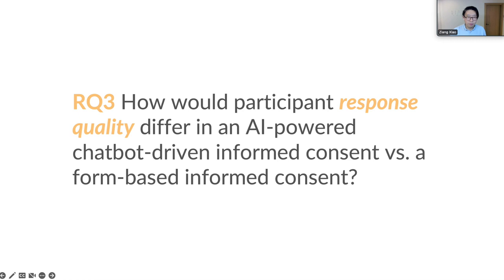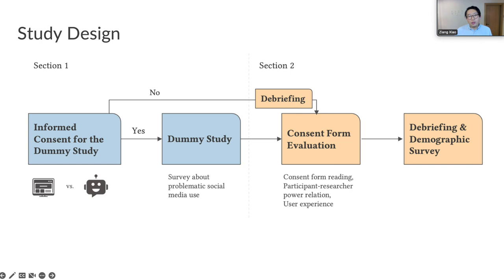To answer all research questions, we conducted an online study with 238 participants. The participant would be randomly assigned to interact with either Rumi or a static form for the informed consent process. It is a dummy informed consent process that asks participants to answer a survey about problematic social media use. Upon consent, the participant starts the dummy study. Then in the second section, the real study starts, where the participant is asked a series of questions about the consent form and their informed consent experience.